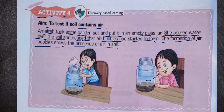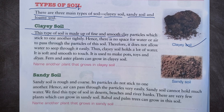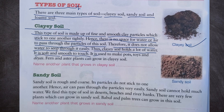There are three main types of soil: clay soil, sandy soil, and loamy soil. Clay soil is made up of fine and smooth clay particles which stick to one another tightly, so there is no space for water or air to pass through. It does not allow water to seep through easily and holds a lot of water. It is soft and smooth to touch and is used to make pots, toys, and diyas. Fern and aster plants can grow in clay soil; hosta is another plant that grows in clay soil.